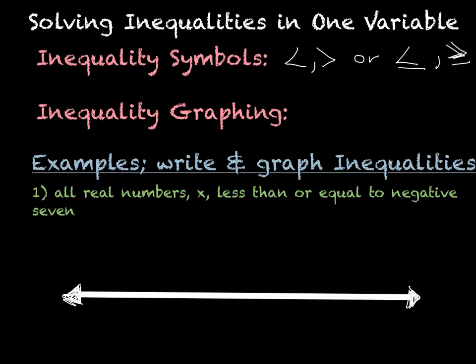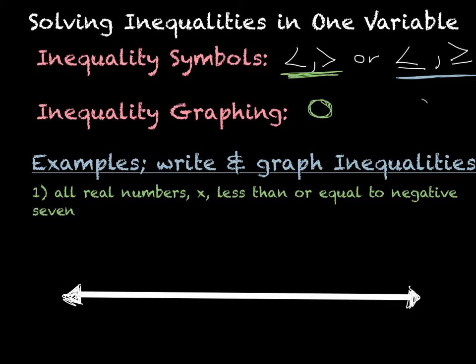Now if we want to actually graph these, we need to know the different graphing inequality symbols. For any of the greater than or less than ones with no 'or equal to,' you're going to have an open circle on that number. But if it's a less than or equal to or greater than or equal to, then it's going to be a circle that you fill in. So you have to be careful when you are graphing that you use the right type of symbol.